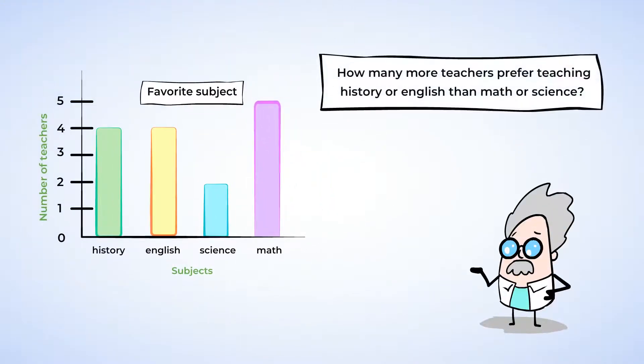Now, I'm going to ask you a tough question. How many more teachers prefer teaching history or English than math or science? This is a comparison problem, yes, but it's multi-step. First, we need to find the number of teachers who prefer history and English by adding. Then we need to find the number of teachers who prefer science and math by adding, and then we will subtract. So first, let's add the number of teachers who prefer history and English: 4 plus 4 equals 8. So 8 teachers prefer history or English. Next, add the number of teachers who prefer science or math: 2 plus 5 is 7. So 7 teachers prefer science or math. Finally, we're going to subtract the number of teachers who prefer science or math from the number of teachers who prefer history or English: 8 minus 7 is 1. So, only one more teacher prefers teaching history or English over science or math. Nice work!